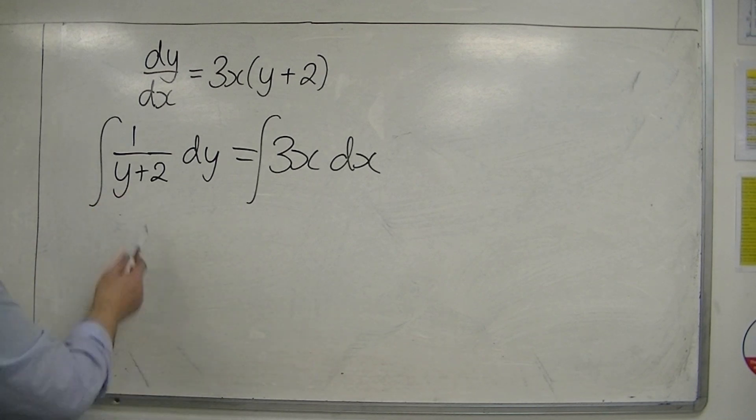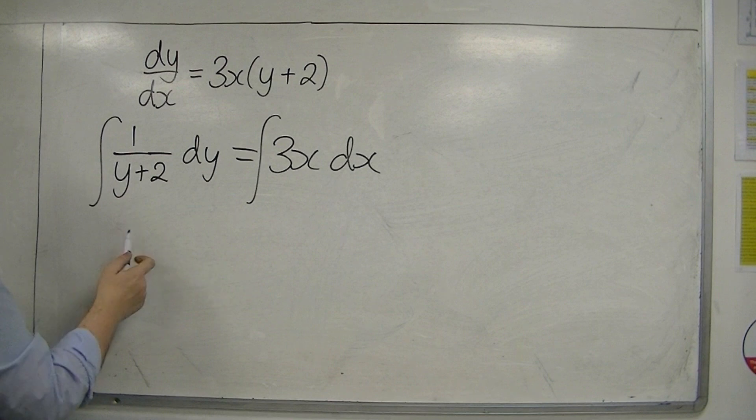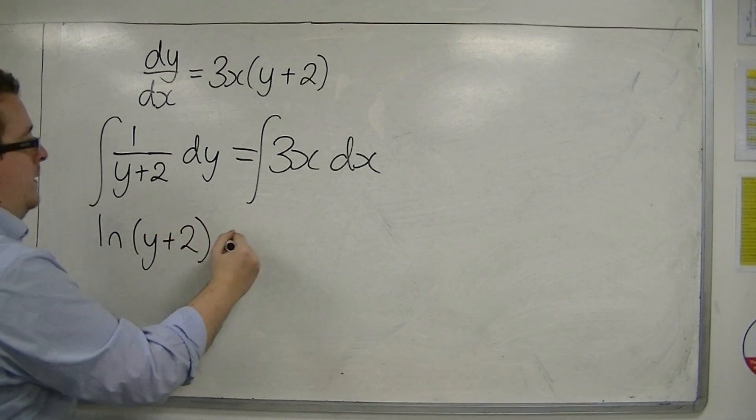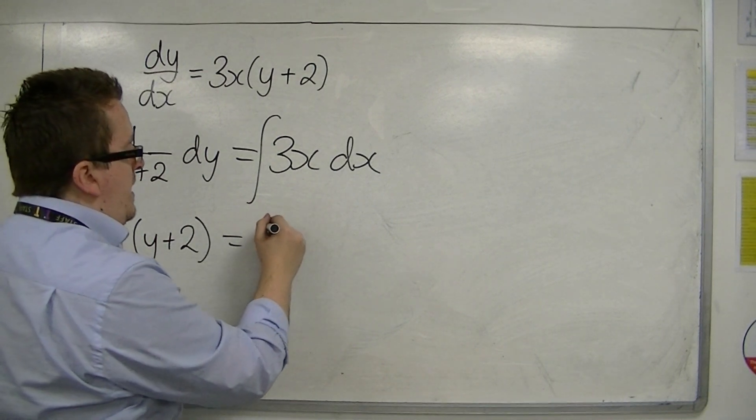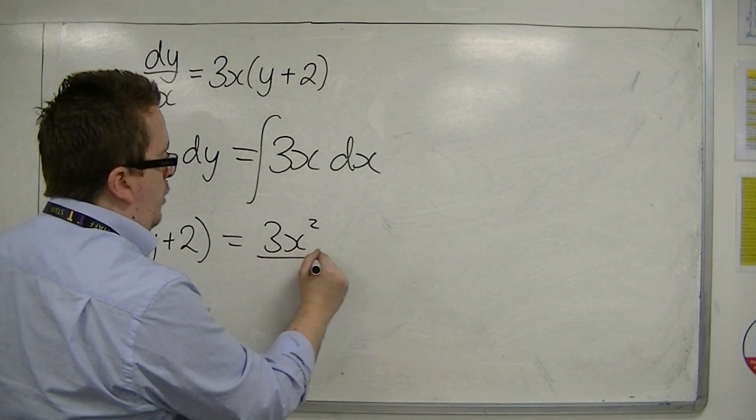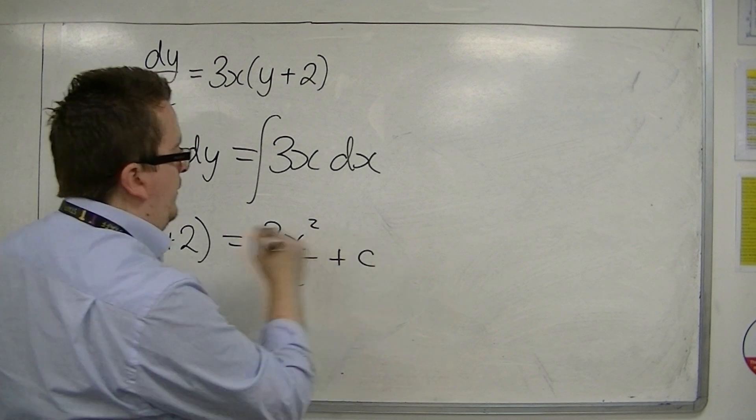So I integrate both sides, so 1 over y plus 2 integrates to log of y plus 2, and 3x integrates to 3x squared over 2 plus a constant c.